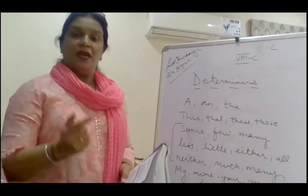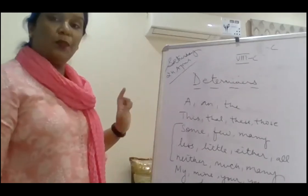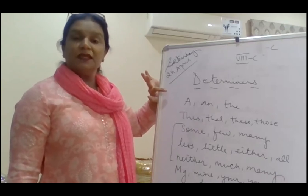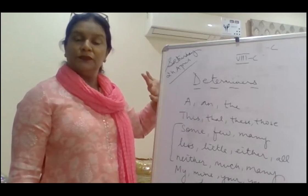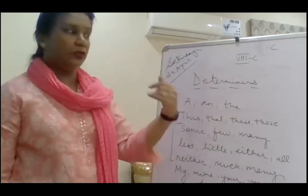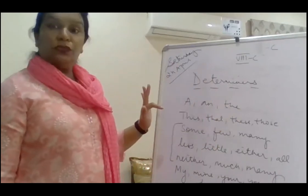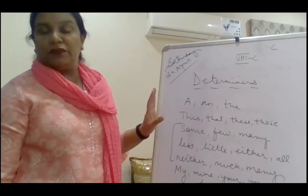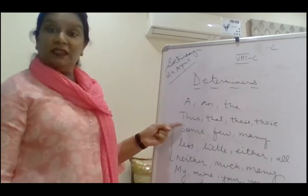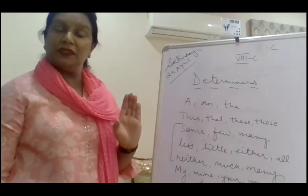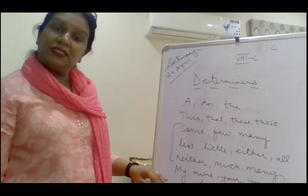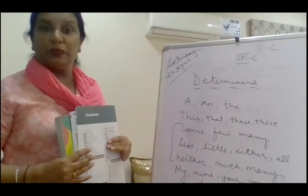There are different kinds of determiners. The most common determiners we are aware of are the articles — 'a' and 'the'. Articles are also a part of determiners. We also use words like 'this book that I borrowed from the library' or 'that is the book I gave you yesterday.' So 'this', 'that', 'these', 'those' — these are also determiners. We call them demonstratives.